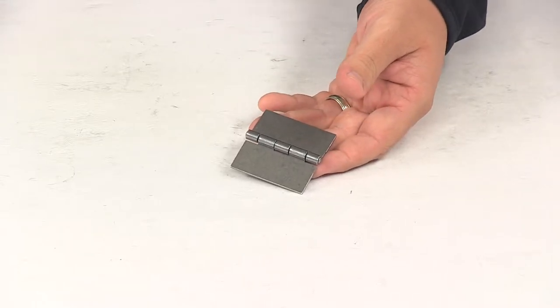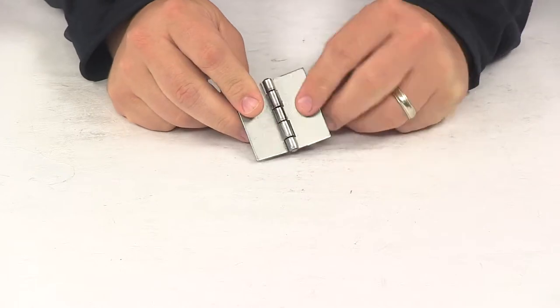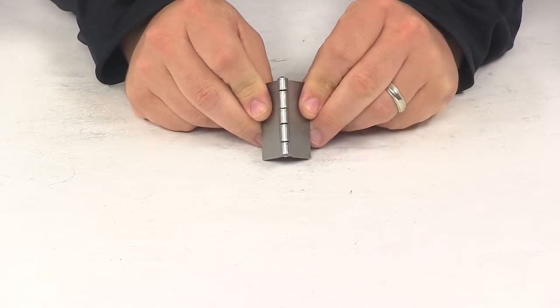Today we're going to be taking a look at the panel lock five knuckle butt hinge. The five knuckle butt hinge lets your door swing open and closed.